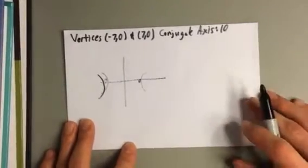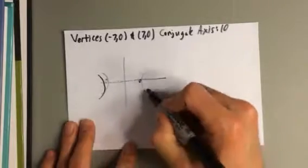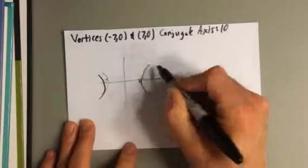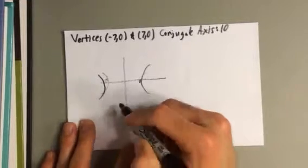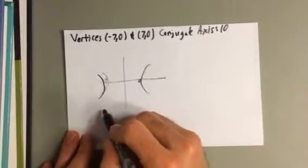I can tell based on where this is that it's going to be centered right at the origin. The way the two halves open up, 7 to the left and 7 to the right, the center is right at (0, 0). So there's not going to be any shifting for the center.